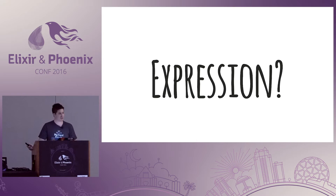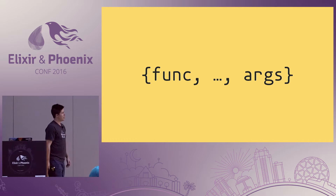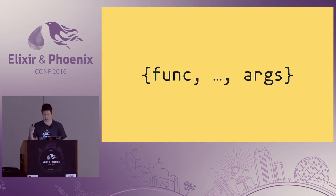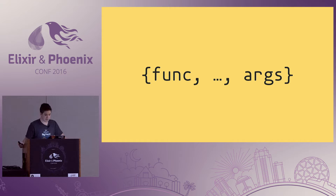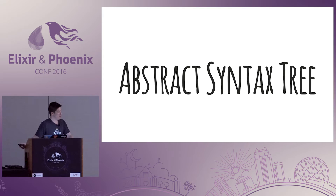Let's define expression and make sure we're all on the same page. An expression is what we're going to call quoted Elixir code. The general form for quoted Elixir code is a three-element tuple. The first element is the function that particular piece of code uses, and the last element is the argument list. Combining these together, you can produce an abstract syntax tree. Many of you are familiar with the idea of abstract syntax trees — they're very common structures used in many languages. In visual form, they might look like this.